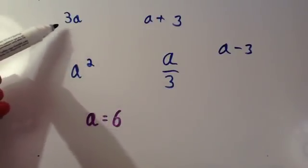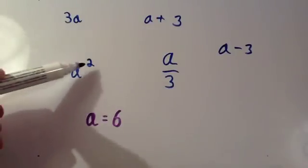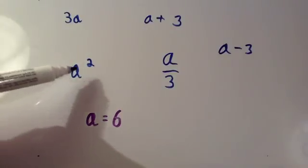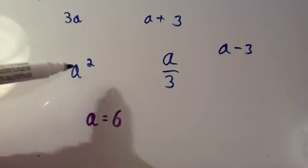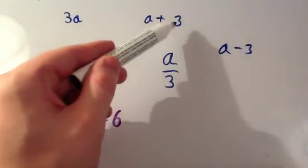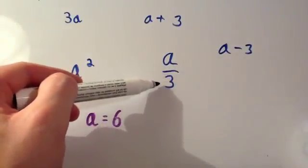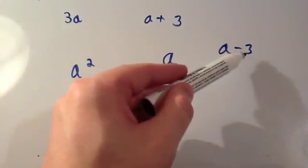So I've got 3a, which means 3 times a. a squared, which means multiply a by itself. Remember, squaring means multiply by itself. a plus 3, a divided by 3, and a subtract 3.